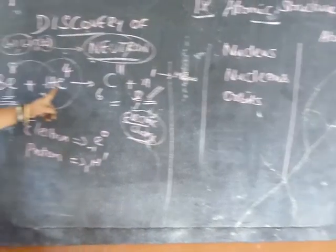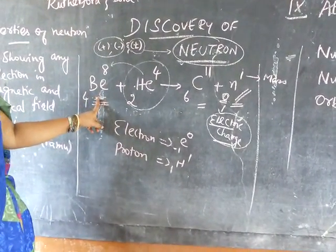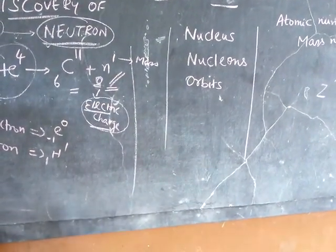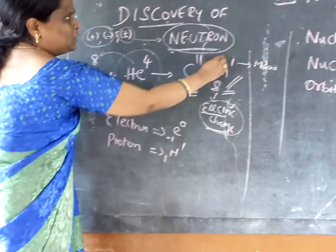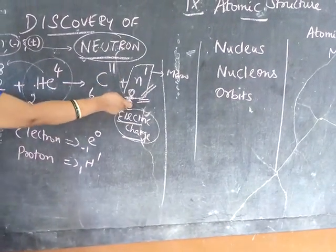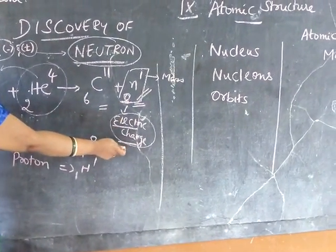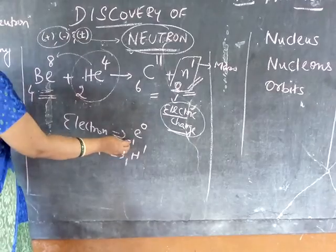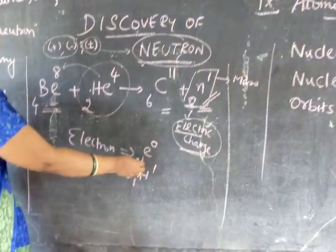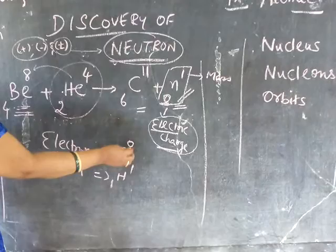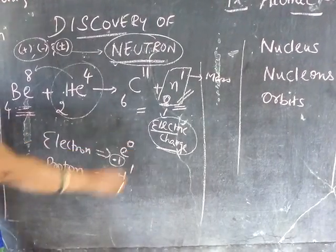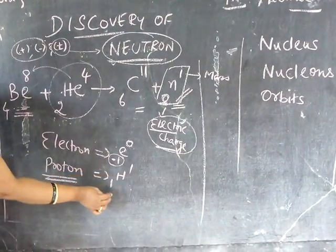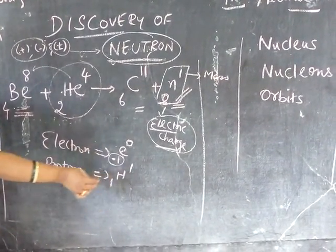When alpha particles — alpha rays — are passed through beryllium, carbon is formed along with neutron. Neutron is represented like this: N, zero, one. This zero represents electric charge and one represents mass. Similarly, if it is electron, electron is represented with minus one — electric charge is minus one — then zero, as it doesn't possess any mass; it possesses negligible mass. Proton is represented as H, one, one.